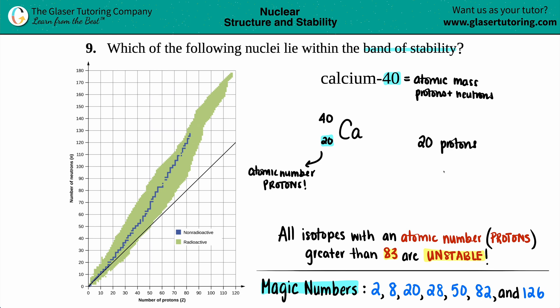And how would we find out the neutrons? Well, if we know that we have 40 total protons plus neutrons, and 20 of them are going to just the protons, I could subtract these two numbers. 40 minus 20 is 20. So we have 20 neutrons.